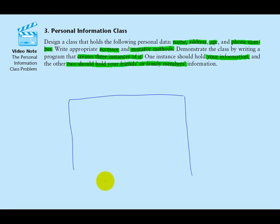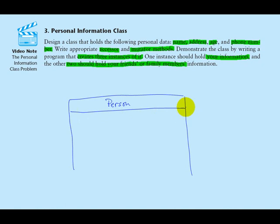First, we list the name of the class, and I'm going to call this class Person. You could also call it Personal Information or Personal Data — whatever you think is appropriate. I think Person is appropriate because when we create instances of this class, each one will represent a person in the program and will contain the personal data for one person.